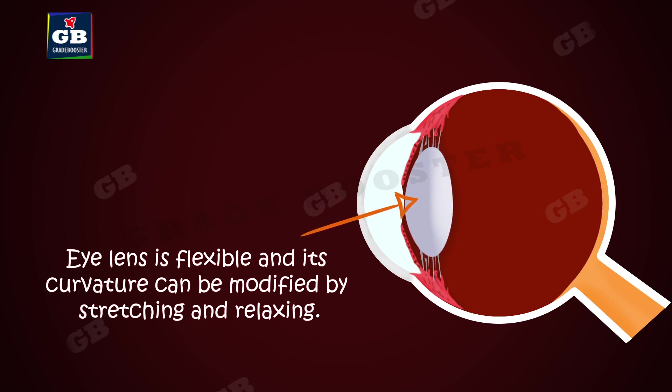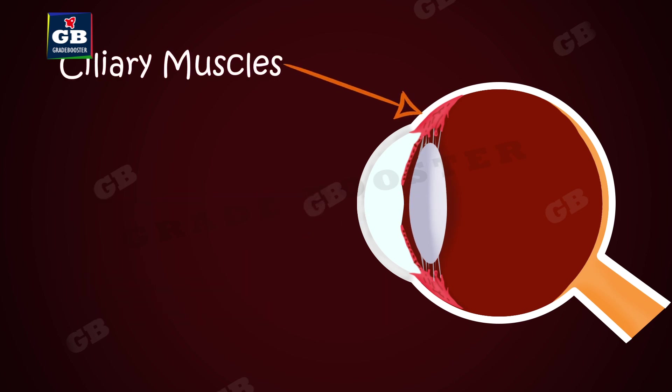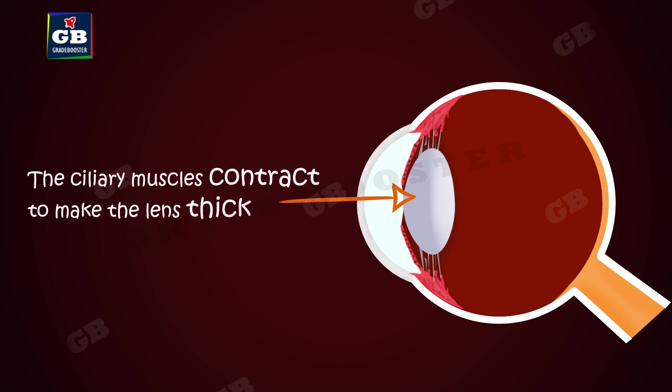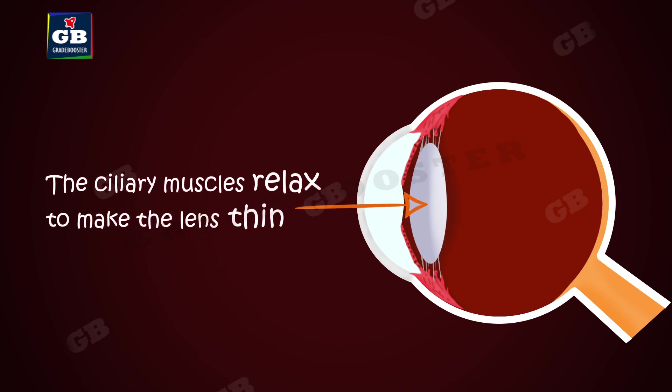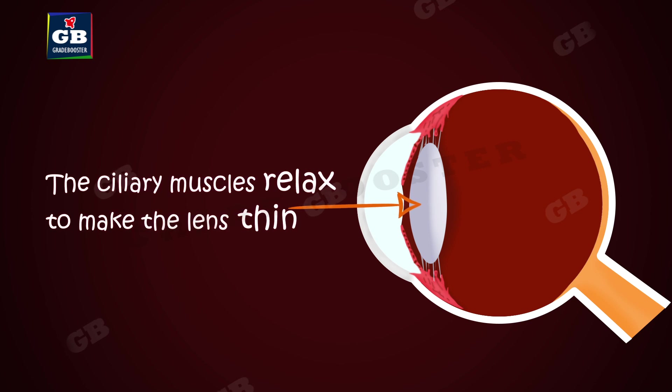How can the eye lens adjust its focal length? The eye lens is flexible and its curvature can be modified by stretching and relaxing. The ciliary muscles do this job. If objects are closer, the muscles contract and make the lens thick. To see distant objects, the ciliary muscles relax and the lens becomes thin to get the focus.